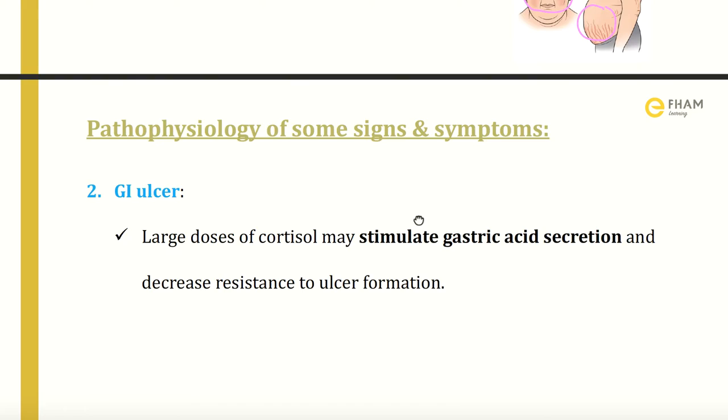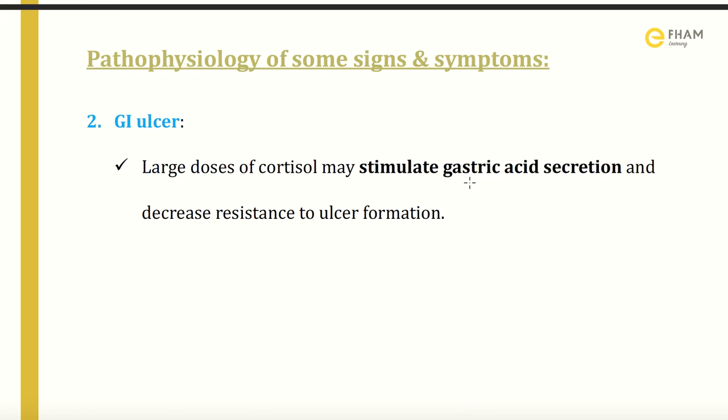The second sign is GI ulcer. Large doses of cortisol may stimulate gastric acid secretion, which decreases resistance to ulcer formation. When acid secretion increases, it mainly results in duodenal ulcer.